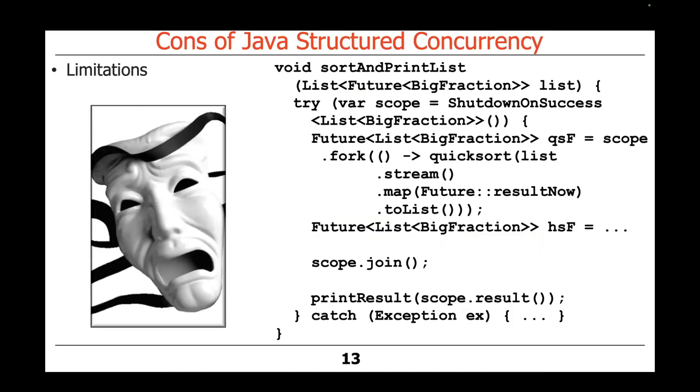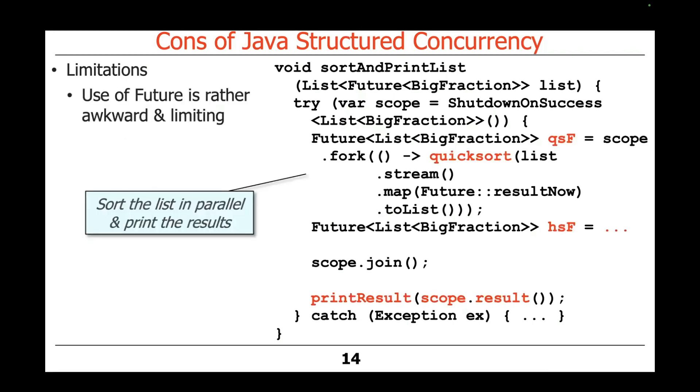Naturally, not everything is rainbows and unicorns, so there's some limitations or some cons with structured concurrency. One of the problems is that they require you to use futures, and that's because when you fork something with the structured concurrency model, you end up getting back a future to the result because it's all going to go off and run in parallel.